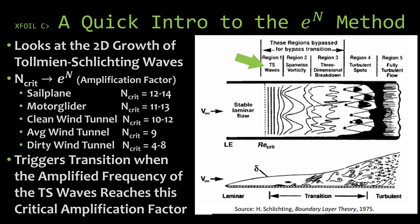The e to the n method looks at the growth of these two-dimensional Tollmien-Schlichting waves. It's kind of hard to pronounce you can just call them TS waves. So the n critical value that you specify in XFOIL would actually be the n in that e to the n that you see there. We call this the amplification factor.